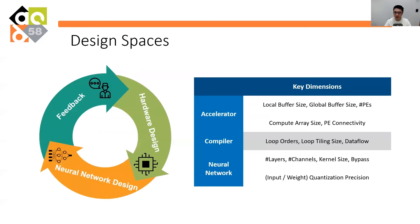Neural Architecture and Accelerator Architecture co-design covers three aspects: designing the neural network, designing the accelerator, and designing the compiler that maps the model on the accelerator. Therefore, the overall design space can be categorized into three classes: accelerator space, including buffer sizes and array sizes; compiler space, including loop orders and tiling sizes; and neural network space, including the number of layers, the number of channels, and the kernel sizes. These design parameters are deeply entangled with each other.